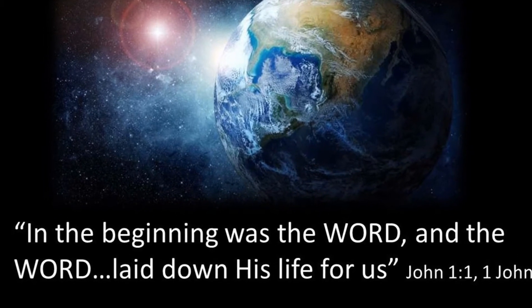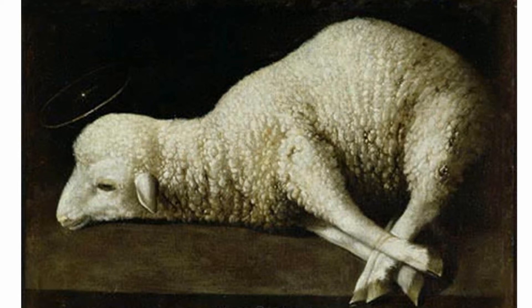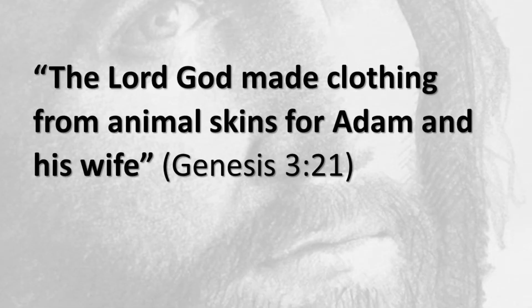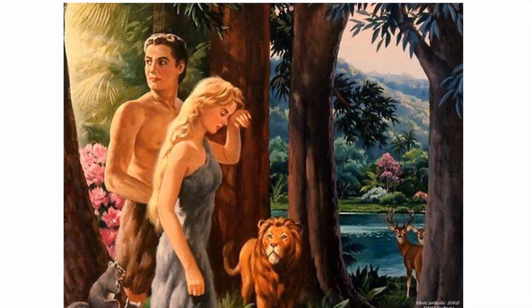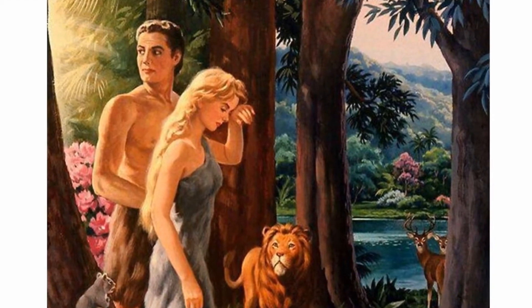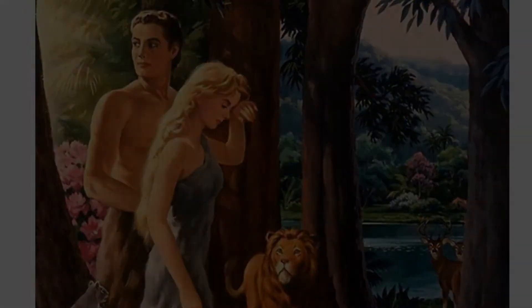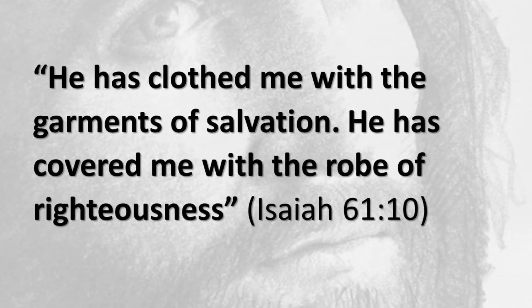The theme of sacrifice in the symbol of the lamb weaves through the whole Old Testament. When Adam and Eve sinned, God himself performed the first sacrifice. The Lord God made clothing from animal skins for Adam and his wife. The death of an animal provided more than just a wardrobe. Through Isaiah, God revealed the deeper symbolic meaning: 'He has clothed me with the garments of salvation. He has covered me with the robe of righteousness.' When sin began, Jesus had already offered up his perfect life to cover our sinfulness.